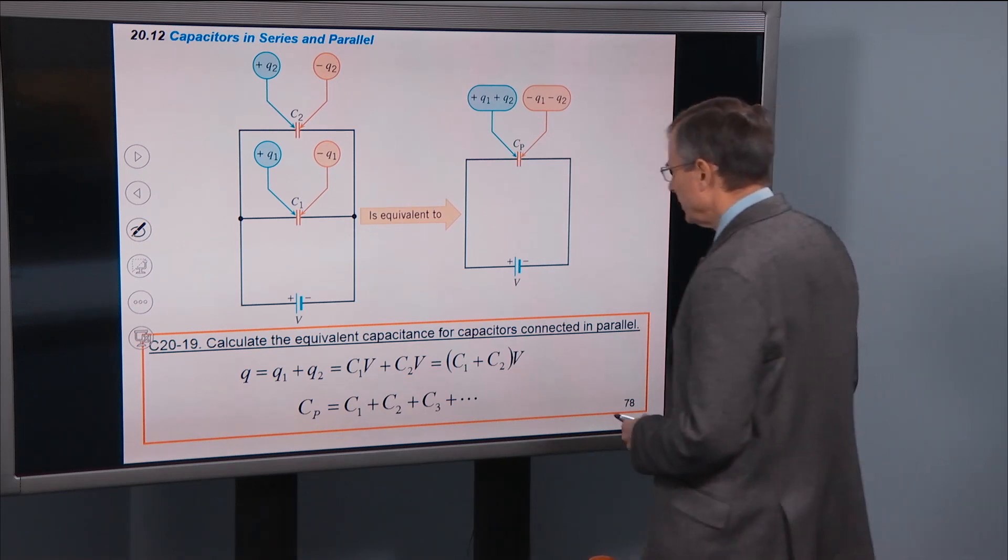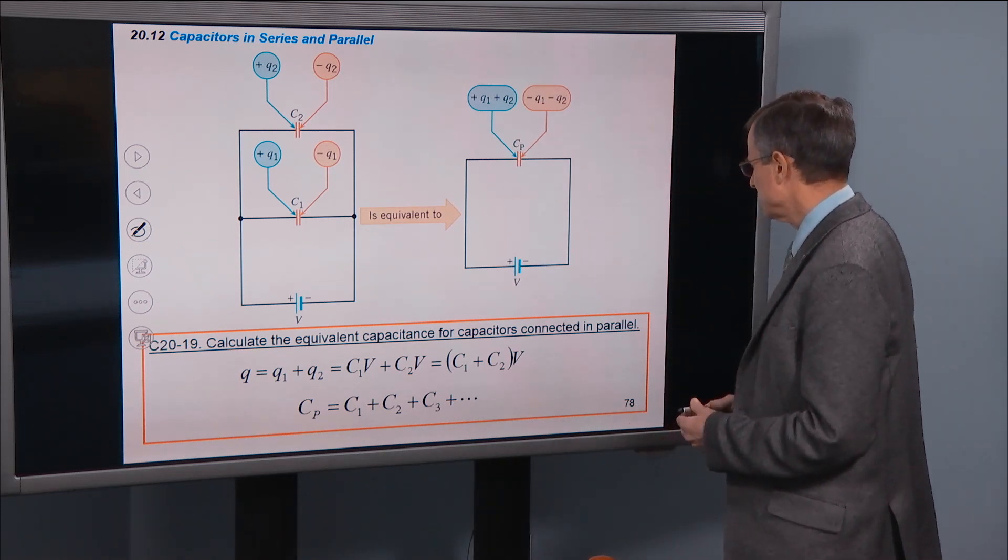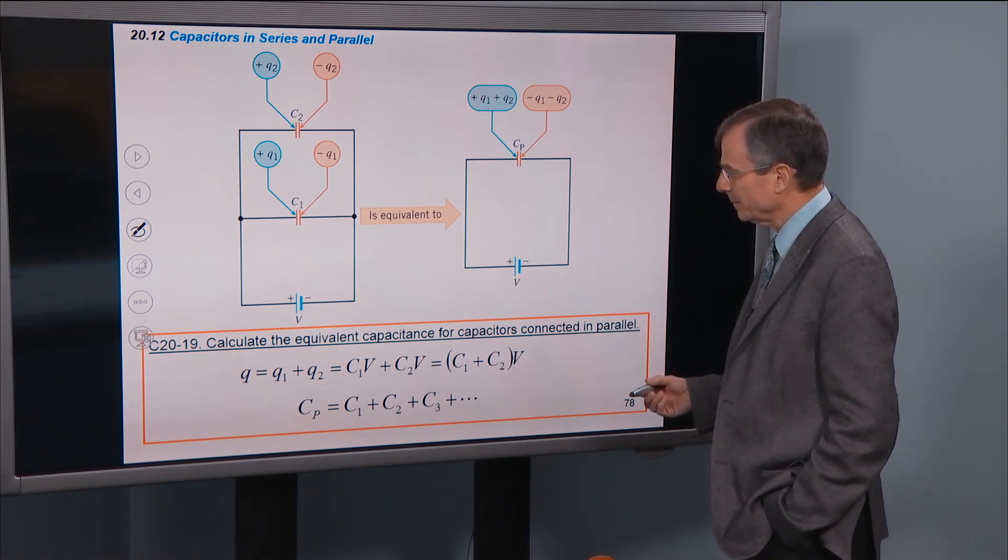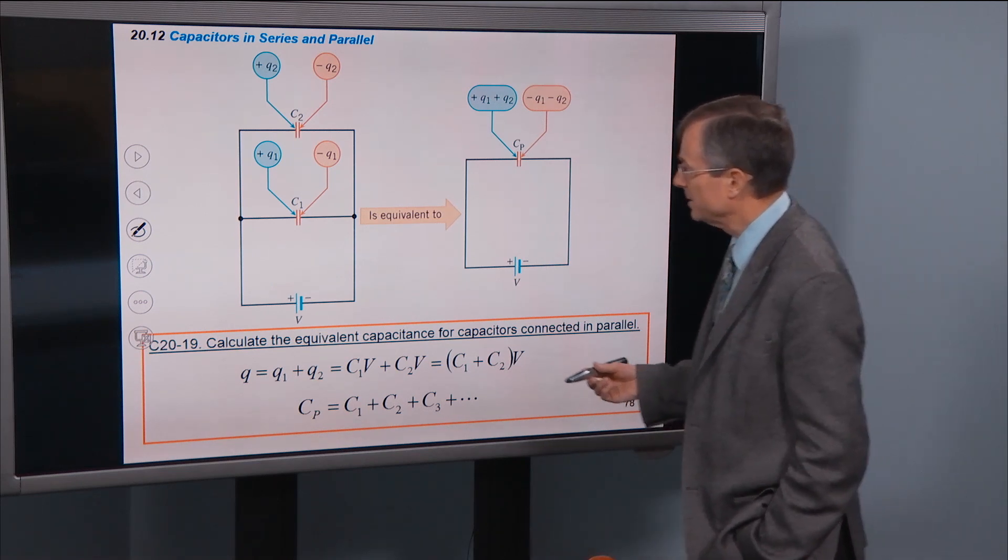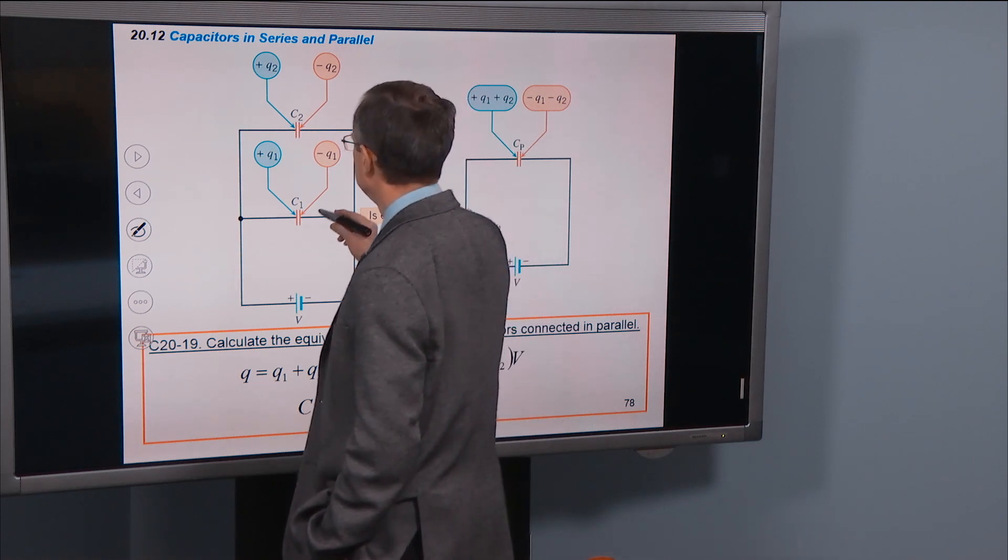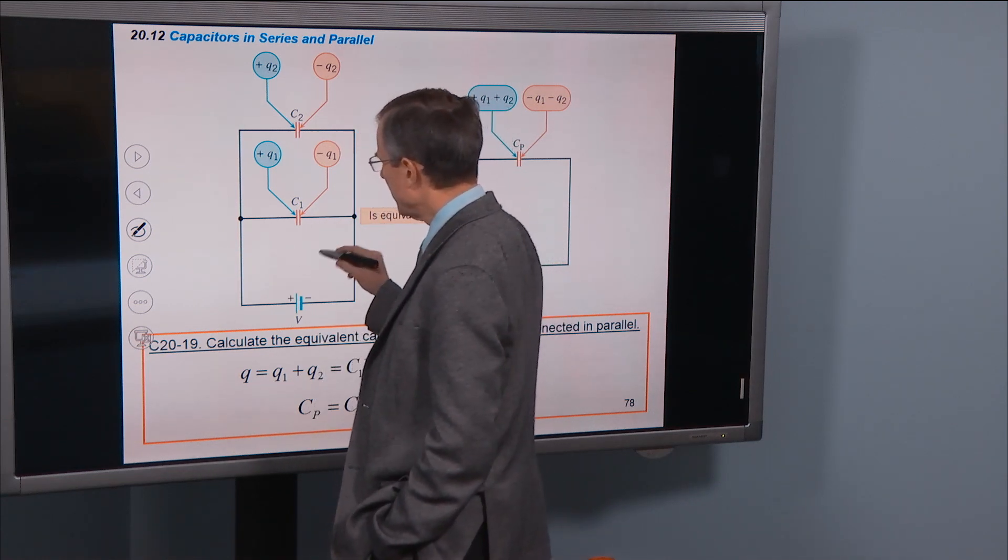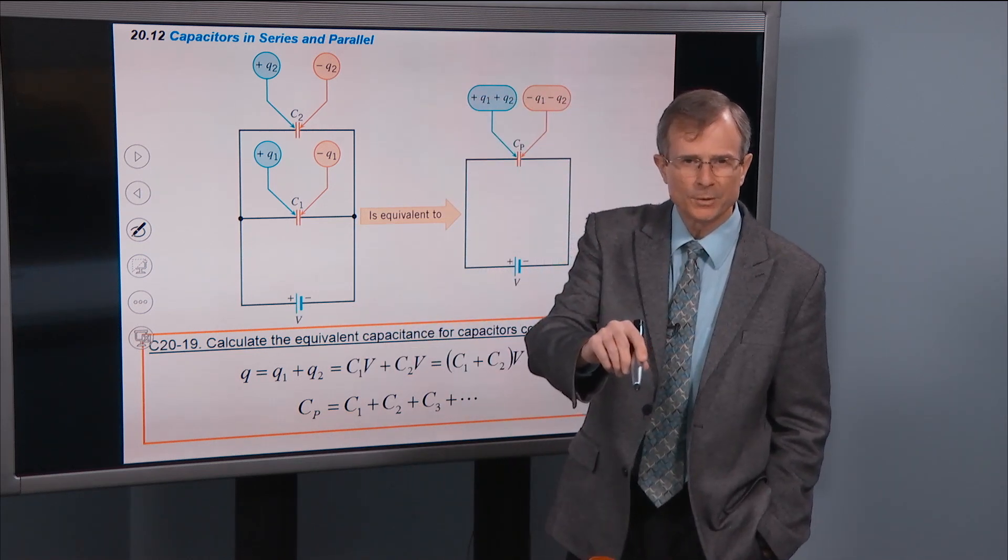What about the equivalent capacitance for capacitors connected in parallel? Well, in this case, we're going to have to add up the charges on the two capacitors. If the two capacitors are in parallel with each other, what can you say about their voltages?